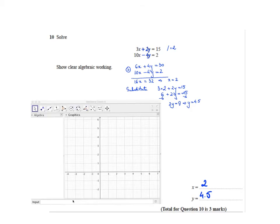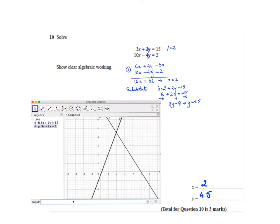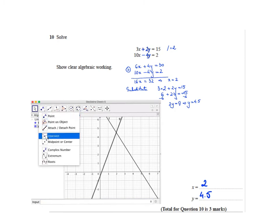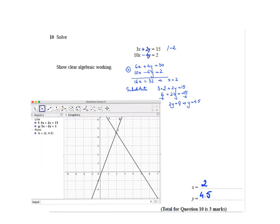Here we have our GeoGebra file. I type the first equation exactly how it is given, then the second equation exactly how it is given, and then under this option I check intersection. Here is x equals 2, y was 4.5.